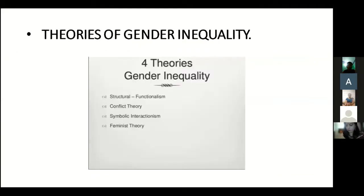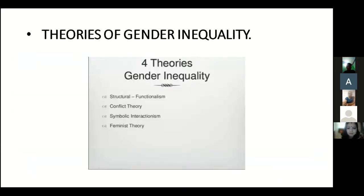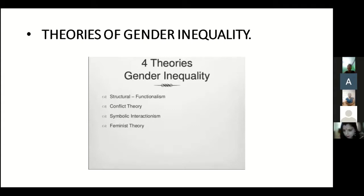Theories of gender inequality: how to change the conversation — Google autocomplete reveals common biases such as 'women should stay at home,' 'women should not work,' and 'women should be seen and not heard.' The four theories of gender inequality are: first, structural functionalism; second, conflict theory; third, symbolic interactionism; fourth, feminist theory.